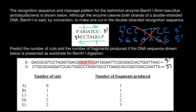On the other strand we have the same sequence: five prime to three prime, GG, AT, CC. The sequence will be cut between the two G's on each strand. This is one recognition site. Let's check if there is another site further along: GG followed by AA — not the same; GG followed by CC — different; GG followed by TT — also different. So we have only one recognition site in this sequence.